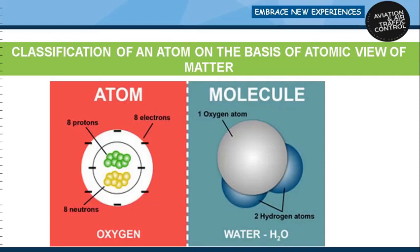Atoms: if a water molecule could be magnified sufficiently, it would be seen to consist of three smaller particles closely bound together. These three particles are atoms — two of hydrogen and one of oxygen. Water is a compound; oxygen and hydrogen are elements. Every element has atoms of its own type. An atom is the smallest indivisible particle of an element which can take part in any chemical change.